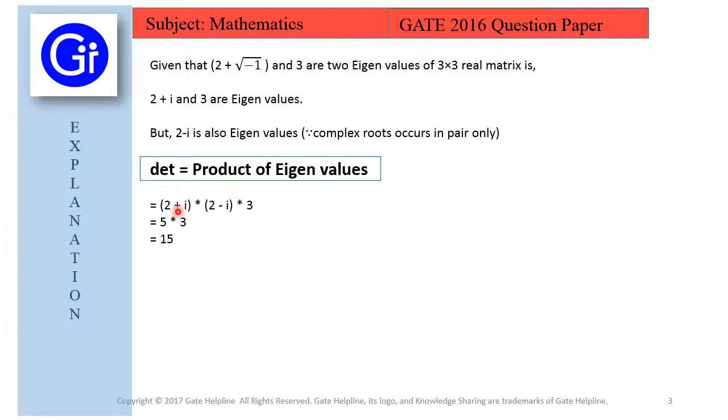So simply we multiply the value of these eigenvalues that is 2 plus i into 2 minus i into 3 and this will result in 15. So the value of the determinant is 15.